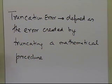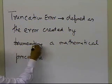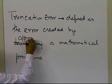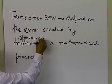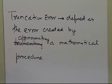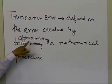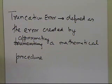Some people don't like the word 'truncating' in the definition of truncation error itself, because they say it doesn't mean much. So instead we can say: approximating a mathematical procedure. If you approximate a mathematical procedure, it creates some error, and that error is associated with truncation error. Truncation error is not about rounding off numbers — it is related to the error created by approximating a mathematical procedure, not numbers.